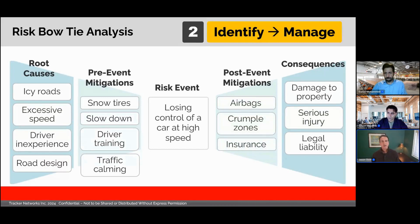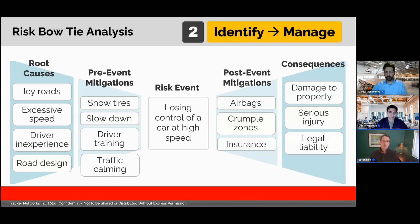I can also identify and map post-event mitigations to lessen the impact if the risk event occurs. Notice how these mitigations are typically aligned with the consequences, in the same way that pre-event mitigations were linked with causes. In practice, you typically want to separate out mitigations that you already have in place from those you need to add in the future, to make it clear which ones currently exist and which are only recommended or planned.